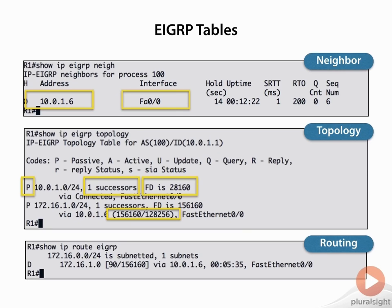On the right-hand side we see 128,256. Here's how it works with EIGRP — it's like me telling you the grocery store is one mile away from me, but you're two miles away from me with me in between. So you have to go two miles to pass my house, then another mile to the store. I advertised a distance of one mile, but your feasible distance is three miles. So 156,160 is the feasible distance — the total metric to reach the destination — while 128,256 is the advertised metric from the neighbor.